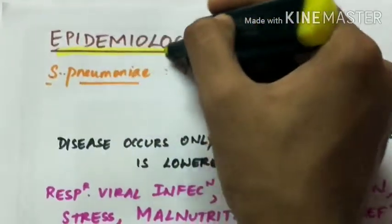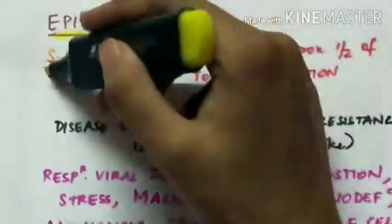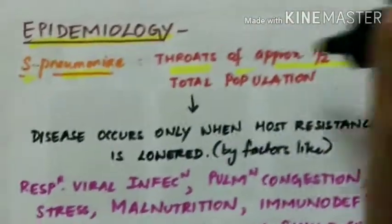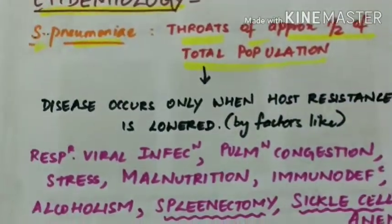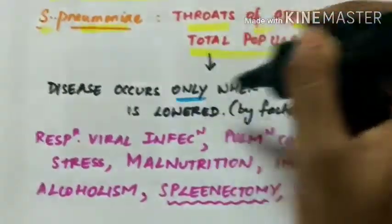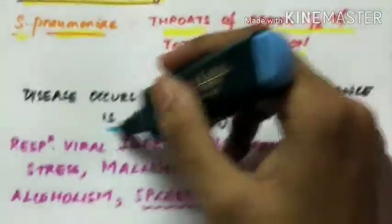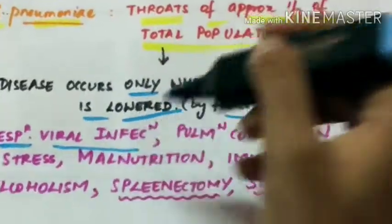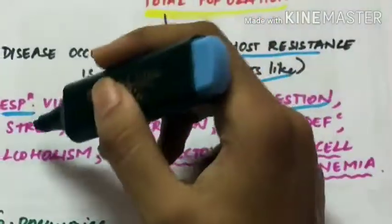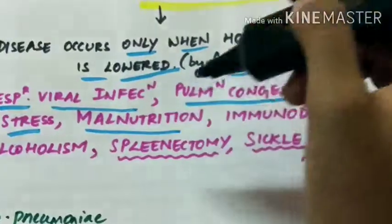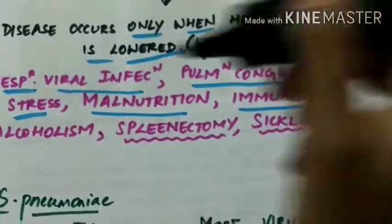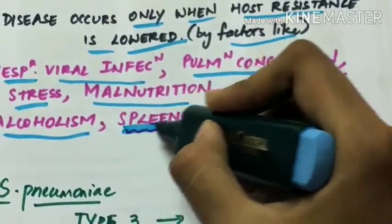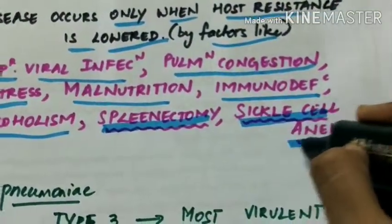Epidemiology. The Streptococcus pneumoniae is present in throats of approximately half of the total population. But it manifests as disease only when host resistance is lowered by factors like respiratory viral infection, pulmonary congestion, stress, malnutrition, immunodeficiency, alcoholism, and most importantly spleenectomy and in sickle cell anemia.